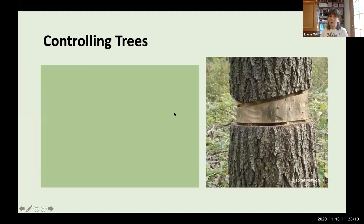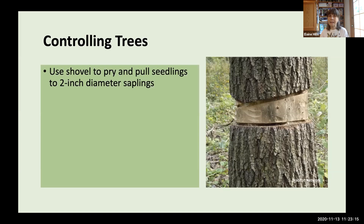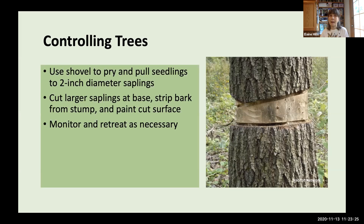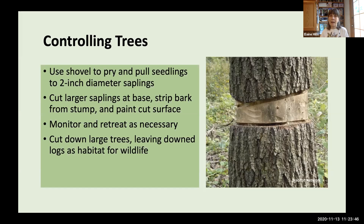For controlling trees: if identified as a seedling up to about two inches in diameter, use a shovel or pickaxe to pry it out. For larger saplings, strip the bark from the stump to allow painting the cut surface, then monitor and retreat as necessary. For significantly larger trees, you can cut the tree down and leave the downed tree as wildlife habitat, or girdle the tree with an axe or chainsaw and retain what's called a 'snag' for wildlife — many animals can make use of that remaining tree structure.